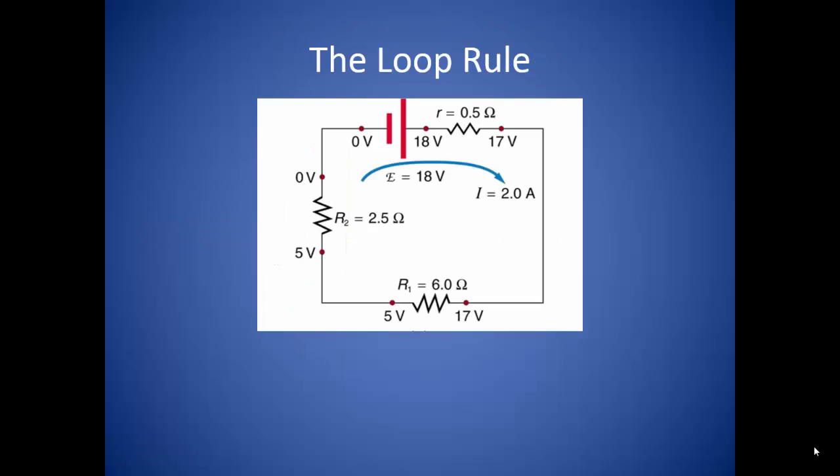Kirchhoff's second rule applies to the conservation of energy in what is known as the loop rule. If you measure the potential at some point in the circuit and follow the loop around the circuit, and when you get back to that point, the potential will be the same. The potential does not change at any given point as the current moves through.